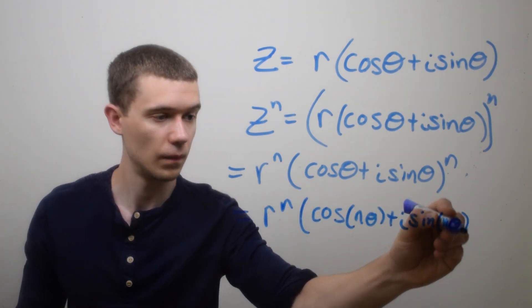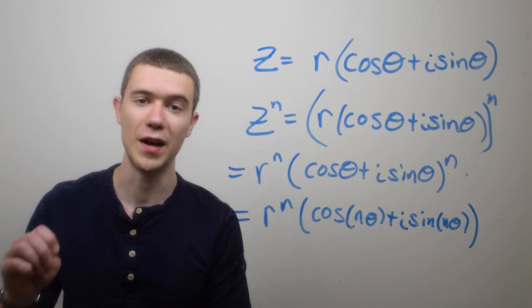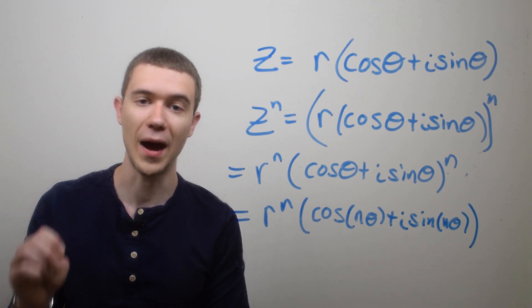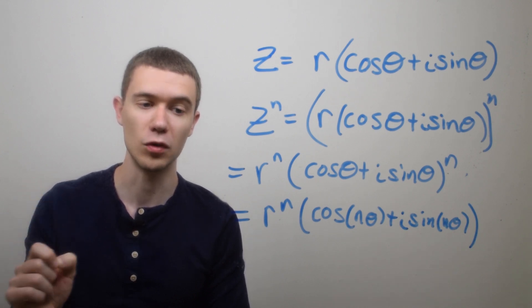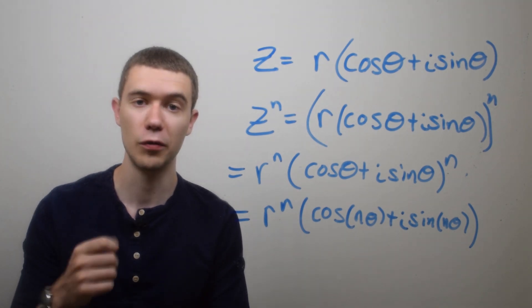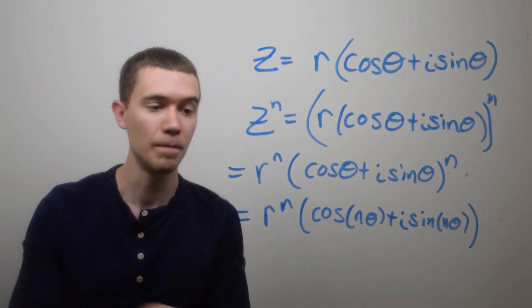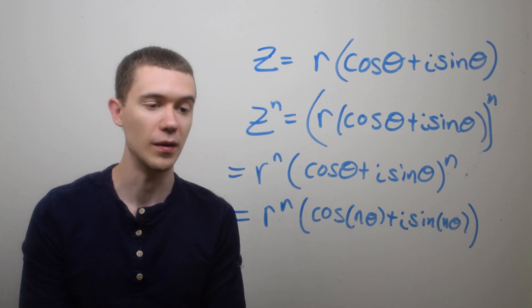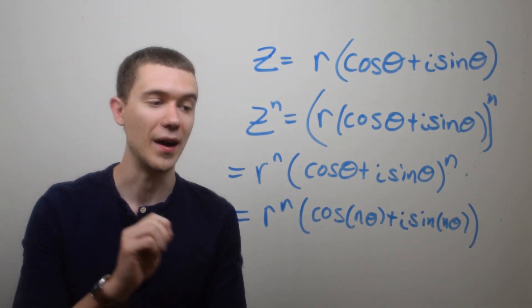And with that formula, we now have a nice way to compute powers of complex numbers. We simply raise r to the n, we raise the modulus to the nth power, and we multiply the argument, the angle, by n. Let's do an example.